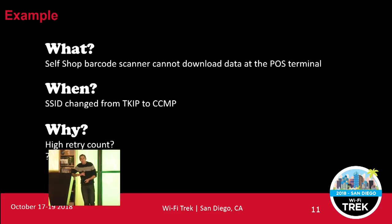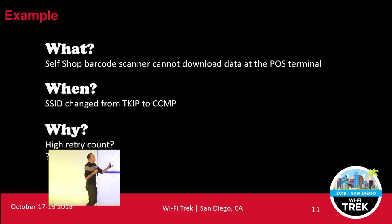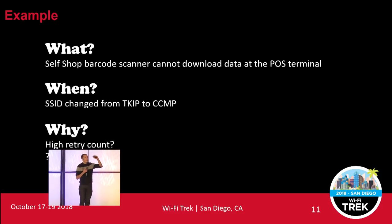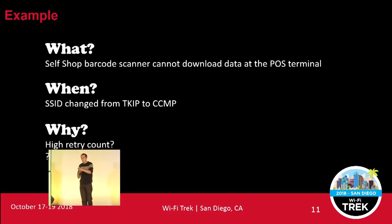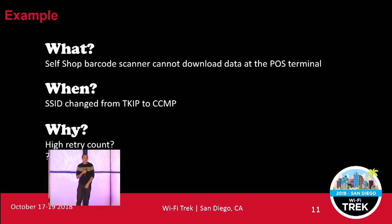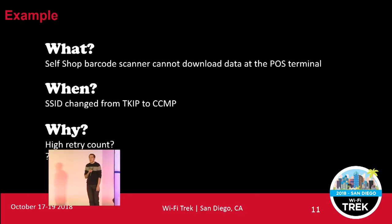Here's another quick example of troubleshooting consultancy I did fairly recently. It was a supermarket chain in the UK with self-shop barcode scanners that customers take around the store, scanning items as they shop. When they get to the point-of-sale tills, the guns download all the shopping to the till and they can just pay and leave. The system had been working for many months, and then they decided to upgrade the security on the Wi-Fi from TKIP to CCMP — moving from WPA to WPA2 — and these devices stopped working.